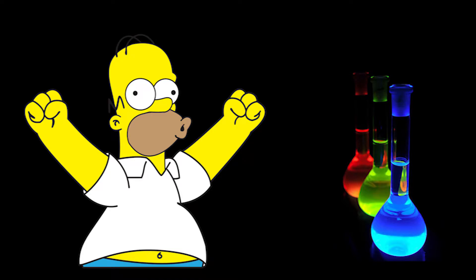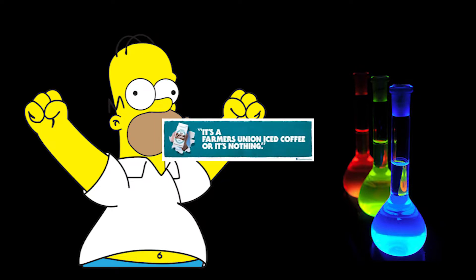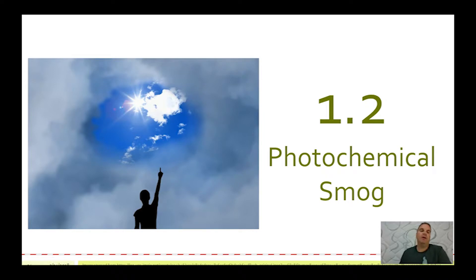Welcome to the second part of this first topic for Year 12 Chemistry. Subtopic 1.2 is all about photochemical smog. We're going to be looking at what causes photochemical smog and what issues it poses to humans.